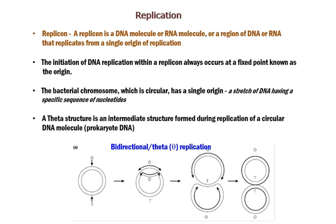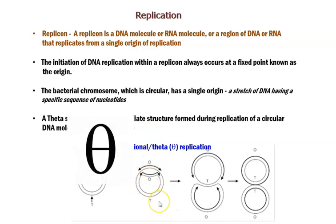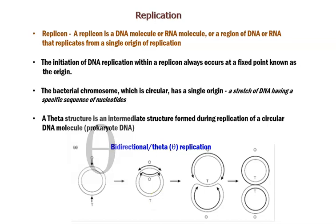During the course of replication, you can see a theta structure formation — an intermediate structure formed during replication. You can see this theta structure in the middle, resembling the Greek symbol theta. This is why it is referred to as theta replication.